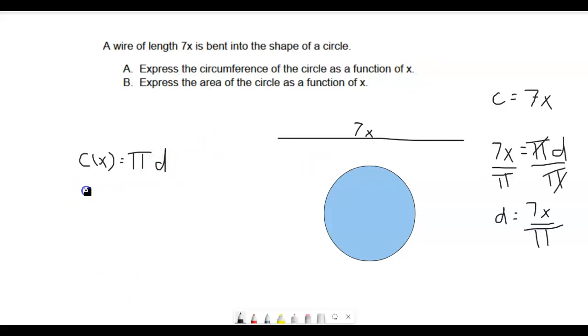So now I can write this as pi times our diameter over here. So that's 7x over pi, 7x divided by pi. And that is going to be equal to, the pi's cancel out, 7x.